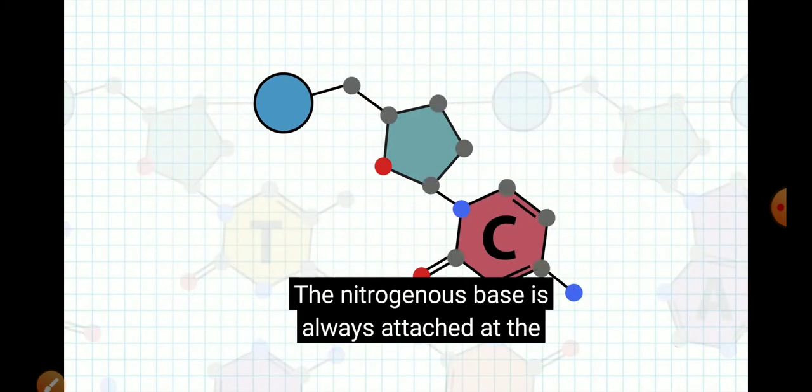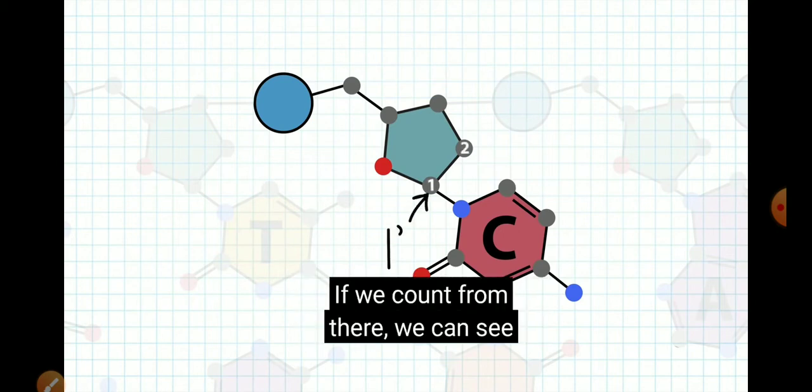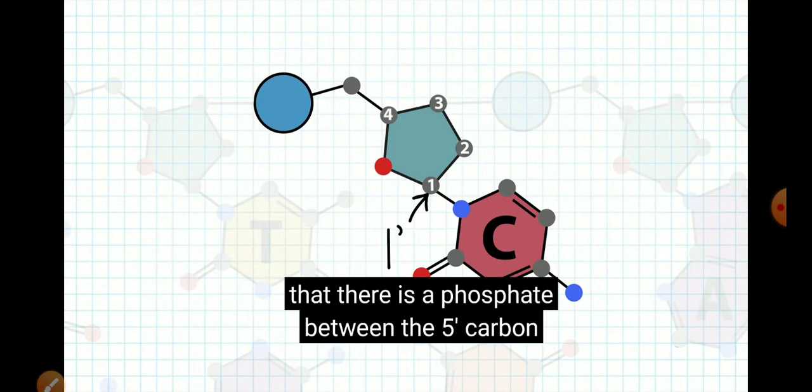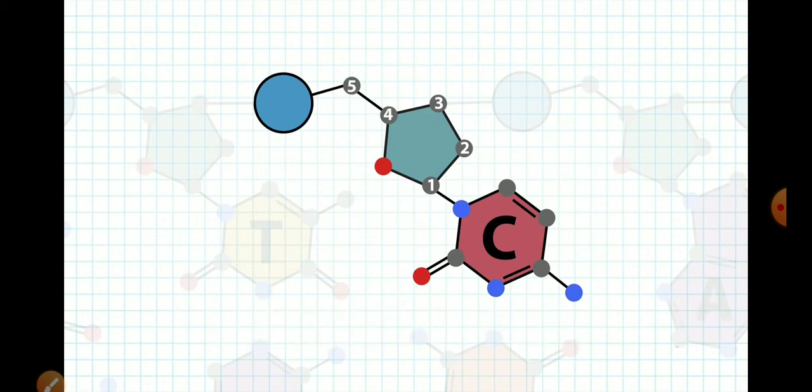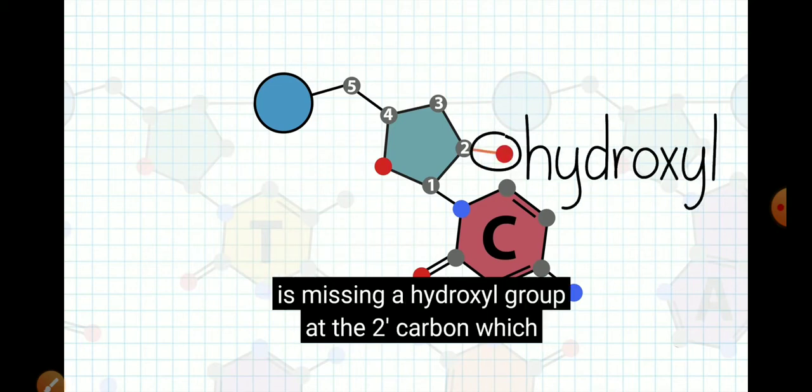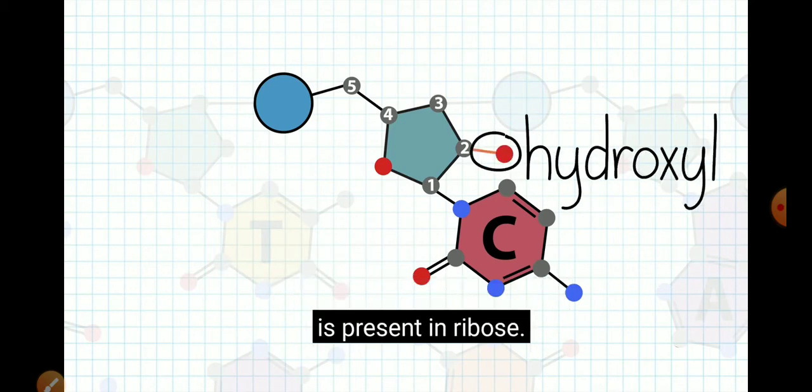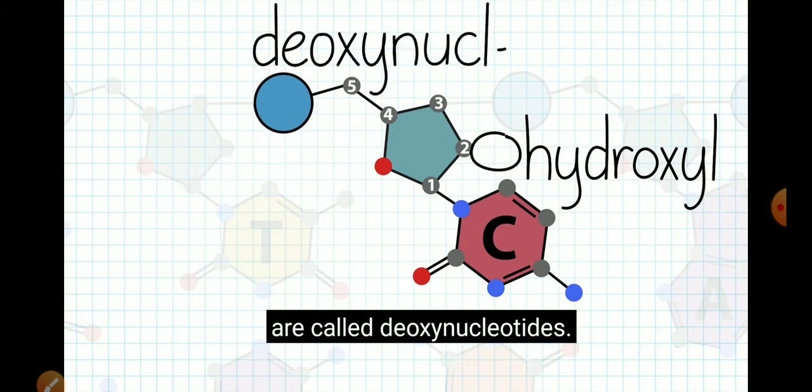The nitrogenous base is always attached at the one prime carbon of the sugar. If we count from there, we can see that there is a phosphate between the five prime carbon of one sugar and the three prime carbon of the neighboring sugar. The sugar is called deoxyribose because it is missing a hydroxyl group at the two prime carbon, which is present in ribose. Because of this, nucleotides in DNA, deoxyribonucleic acid, are called deoxynucleotides.